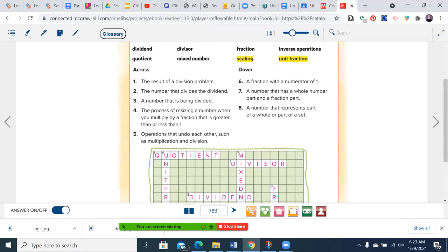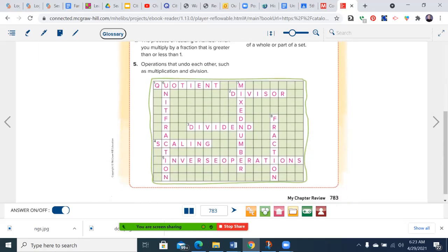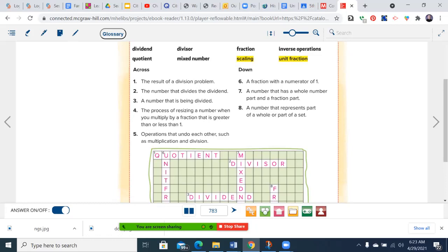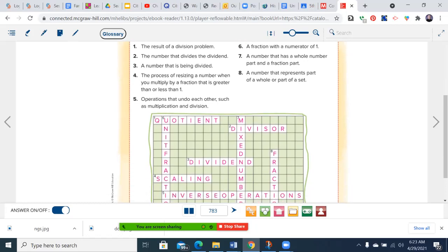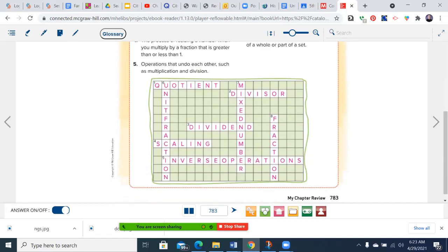Six down, a fraction with a numerator of one is a unit fraction. So one half, one third, one ninth, one billionth. Number seven down, a number that has a whole number part and a fraction part, and that is a mixed number. Number eight, a number that represents part of a whole or part of a set, that's a fraction.